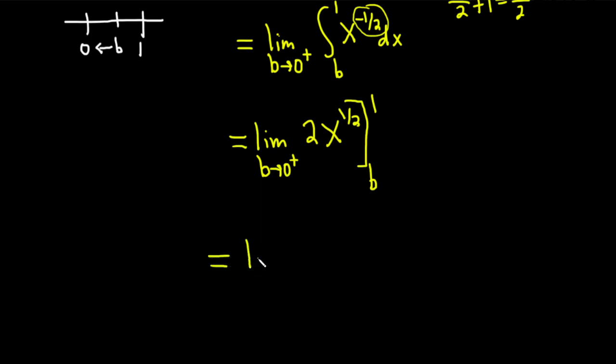This is equal to the limit as b approaches 0 from the right. And you first plug in the top number. So by the way, x to the 1 half is really the square root of x. So I'm just going to write it as that down here. So it'll be 2 square root of 1 minus and then 2 square root of b.